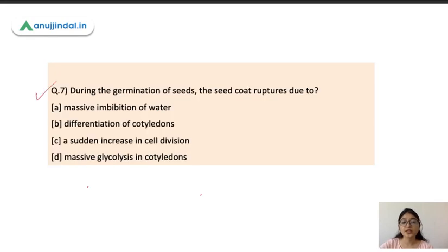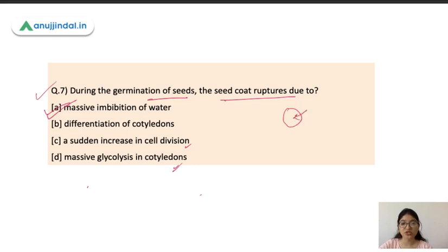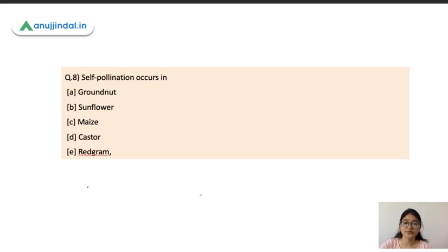Question 7: During the germination of seeds, the seed coat ruptures due to what — massive imbibition of water, differentiation of cotyledons, a sudden increase in cell division, or massive glycolysis in cotyledons? The correct answer is massive imbibition of water. The seed imbibes water, enzymes get activated, metabolism rate increases, a lot of energy is produced, and this causes the seed coat to rupture.